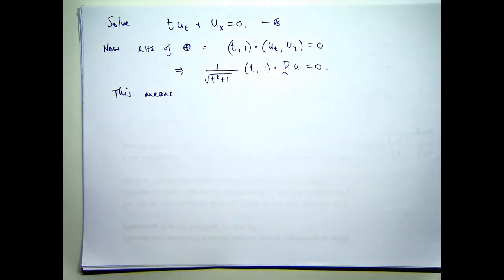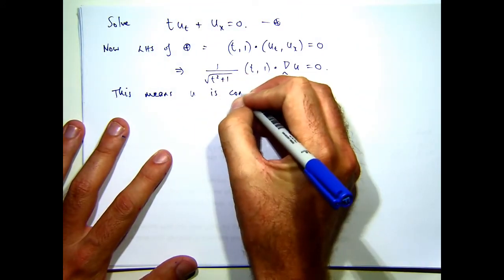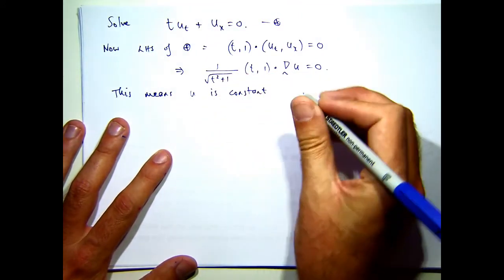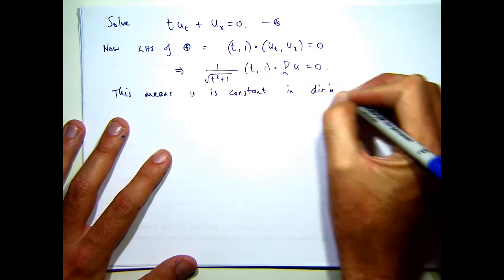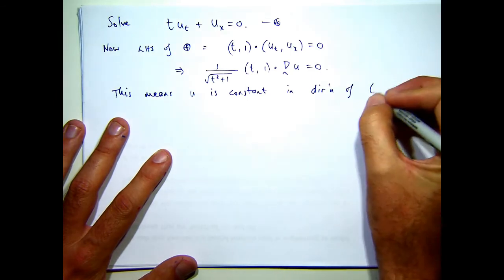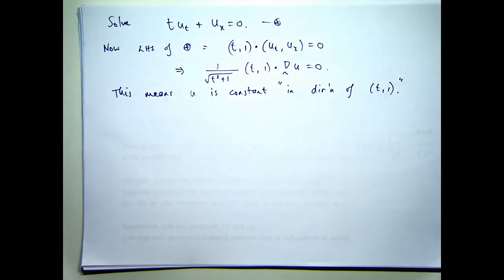Now, if you think of this left-hand side as the derivative, it means that the function U must be equal to a constant. It's constant in the direction of T comma 1.